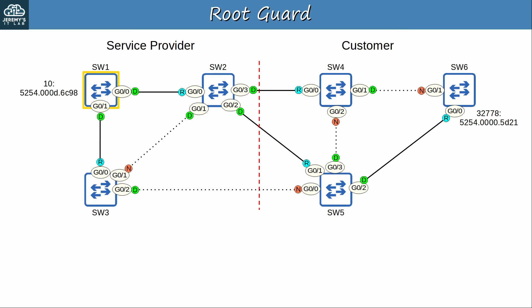Let's get started with RootGuard. This network is divided into two parts: a service provider network and a customer network. The service provider's SW1 is the root bridge. Let's see how RootGuard can be used by the service provider to ensure that SW1 remains the root.